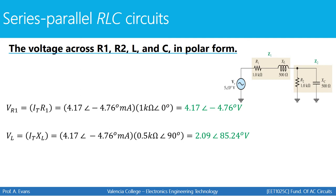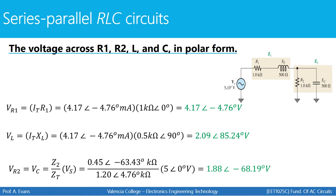To find the voltage for R2 and XC, since R2 and the capacitor are in parallel, we find the voltage for Z2. Finding the voltage for Z2 gives us the voltage for the parallel combination of R2 and XC. Z1 and Z2 form a series relationship, so we set up a voltage divider: Z2 divided by the total impedance, multiplied by the source. This gives the voltage for R2 and the capacitor — 1.88 volts at an angle of negative 68.19 degrees.